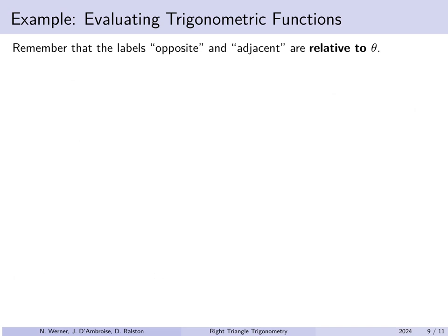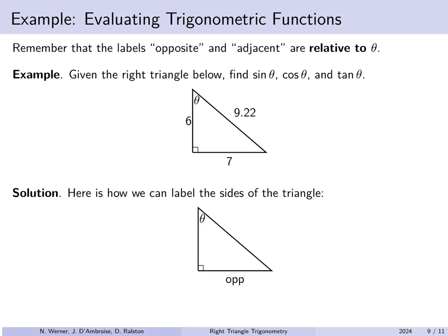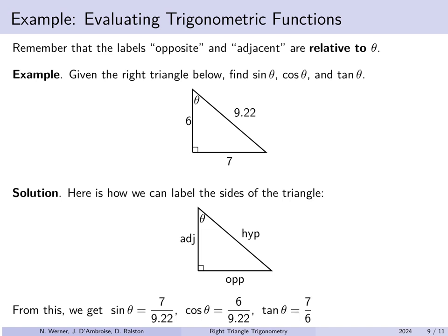Remember, opposite and adjacent are relative to the angle theta. Here theta refers to the angle at the top, with the right angle at the bottom left. We still label sides opposite theta, adjacent to it, and the hypotenuse. So sine theta equals 7 over 9.22, cosine theta equals 6 over 9.22, and tangent theta equals 7 over 6.